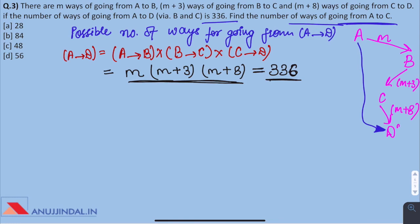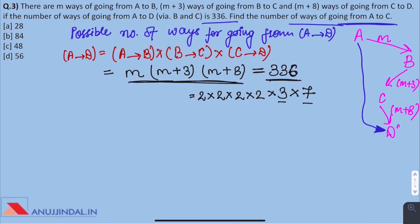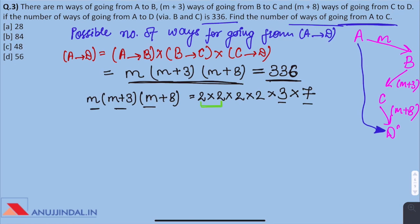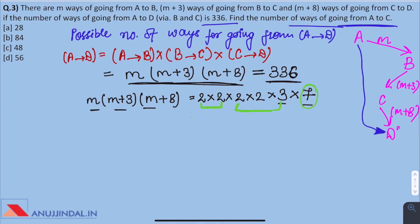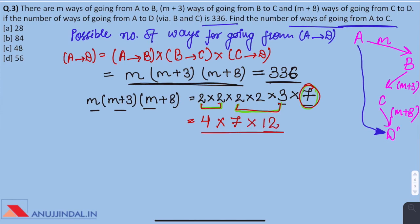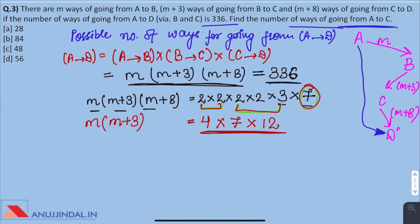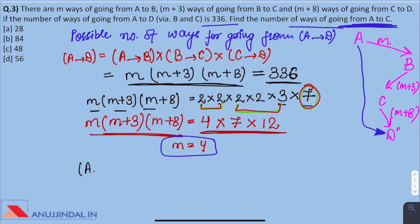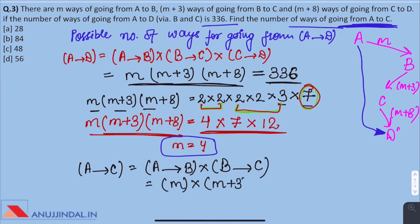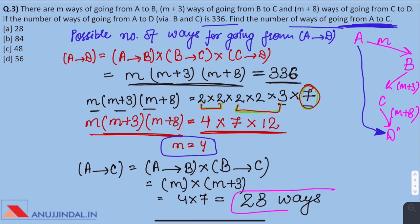The factors of 336 are 4 × 7 × 12, confirming M = 4. The number of ways from A to C is M × (M+3) = 4 × 7 = 28 ways. So the answer is 28.